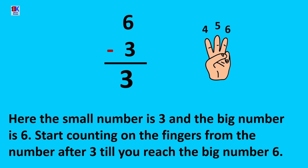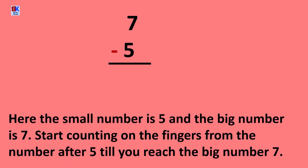This was easy! Let's try one more sum. 7 minus 5. Here the small number is 5 and the big number is 7. Start counting on the fingers from the number after 5, which is 6, till you reach the big number 7. 6, 7. We required 2 fingers to reach the big number 7, so the answer of 7 minus 5 would be 2.